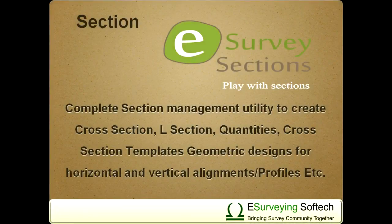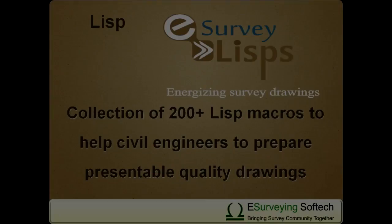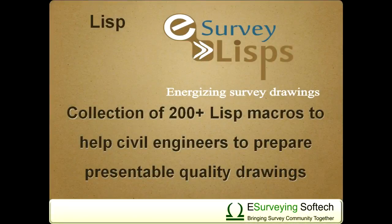Section: a complete section management utility to create cross-sections, L-sections, quantities, cross-section templates, geometric designs for horizontal and vertical alignments or profiles, etc. Lisp: a collection of 200 plus Lisp macros to help civil engineers prepare presentable quality drawings.